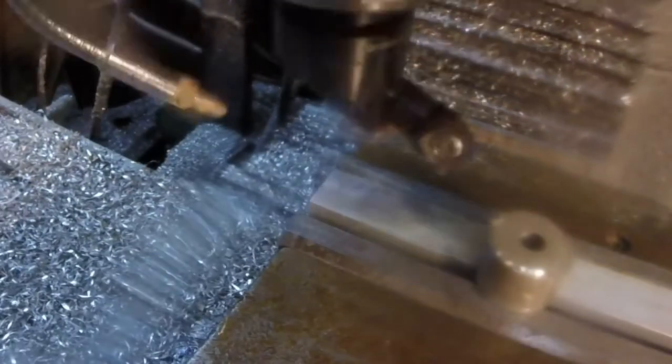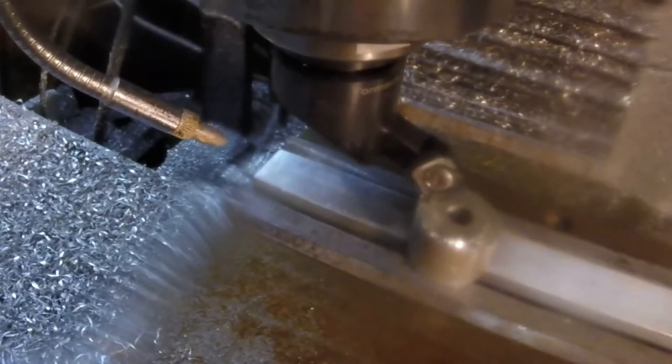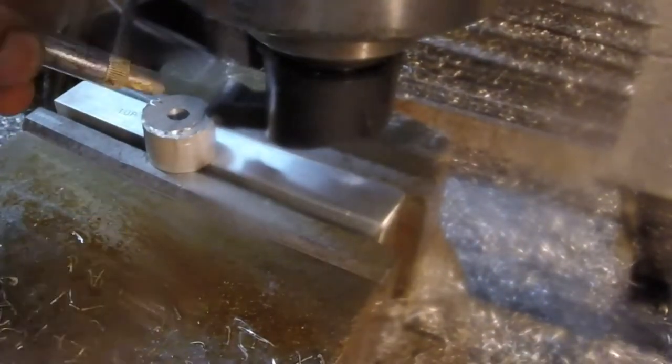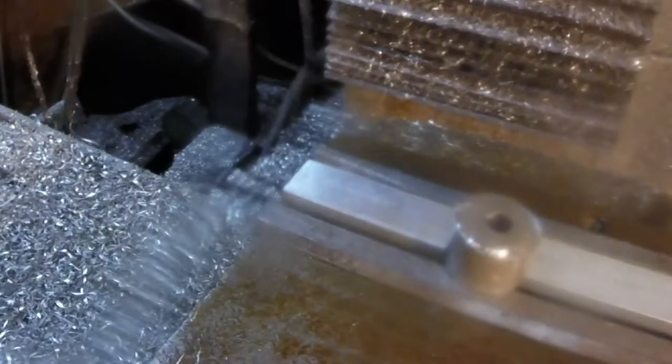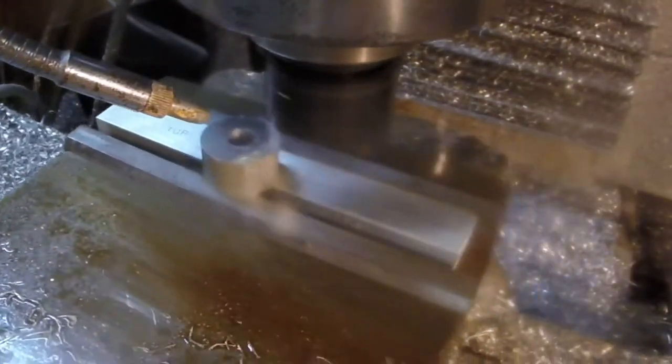I know how thick it needs to be, so I'm setting my zero at the top of the vise jaws since that's where the shoulder is resting. Now I can just bring it down to the thickness. That'll pretty much be it.